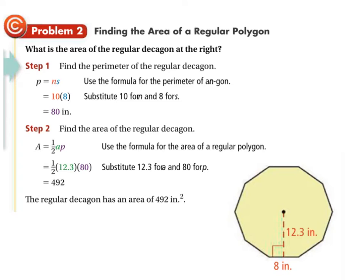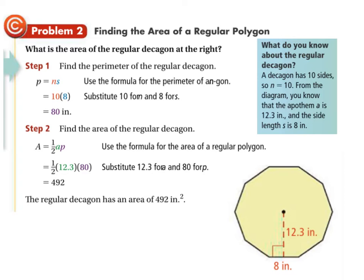What is the area of a regular decagon? A decagon has 10 sides, so n equals 10. The apothem is 12.3 inches and the side length is 8 inches. To find the perimeter using the simplified formula, the perimeter is just the side length times the number of sides. It's 8 on each side and there are 10 sides, so 8 times 10 equals 80 — the perimeter is 80 inches. Now we can fill that into the formula: the area is one half times the apothem length of 12.3 times the perimeter of 80.